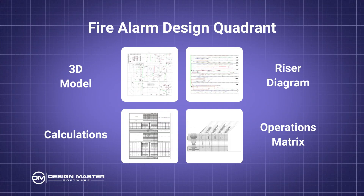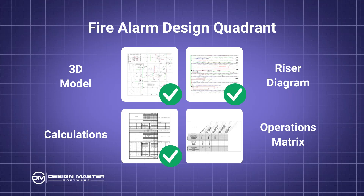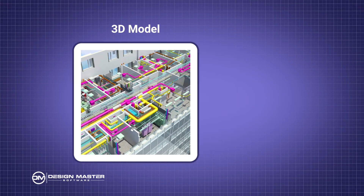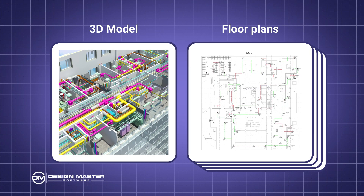When you are working on your fire alarm design, you want to make sure that a change in one of these boxes flows to all of the others. If you change the name of a panel, that's going to have to be updated on the 3D model and on your floor plans, on the riser diagram, and in your calculations. For the 3D model, I'm really thinking about both the 3D model and also the floor plans that you have to produce.